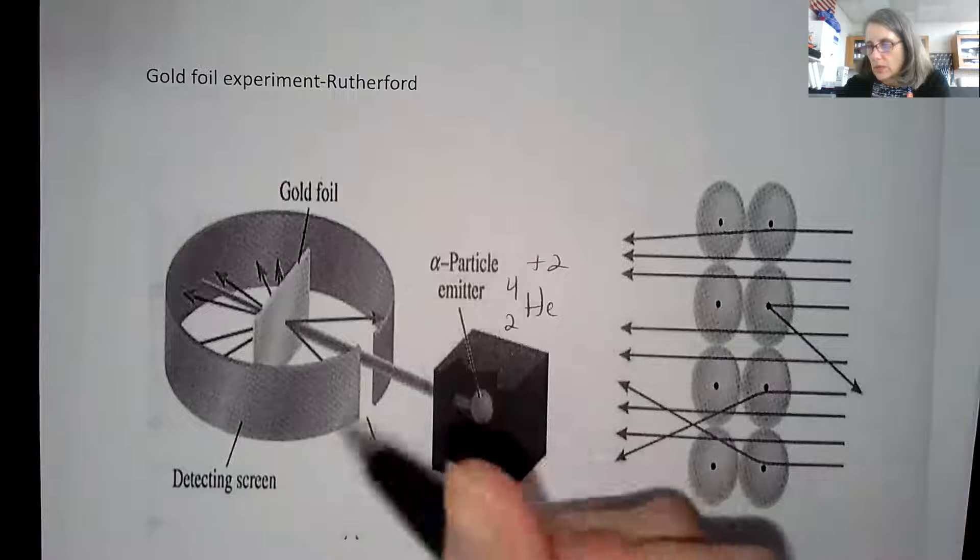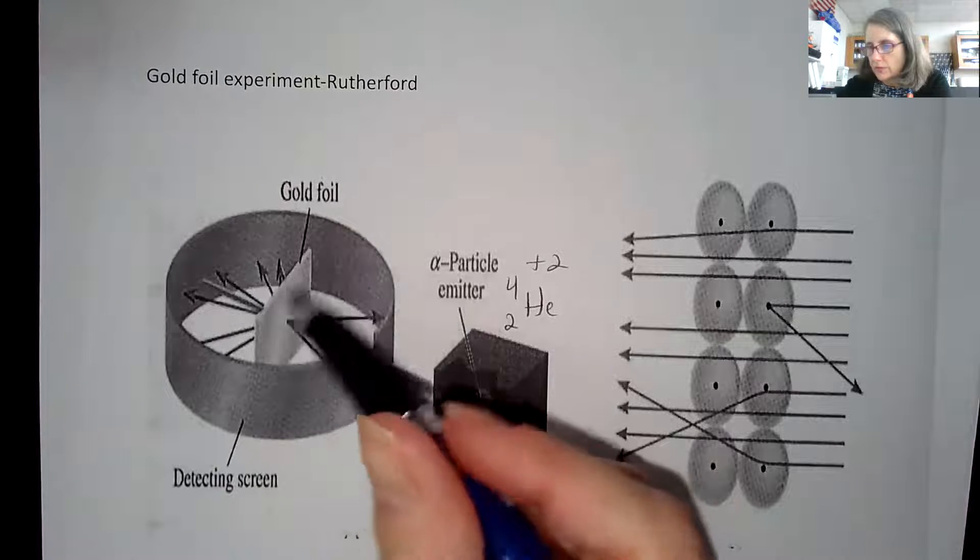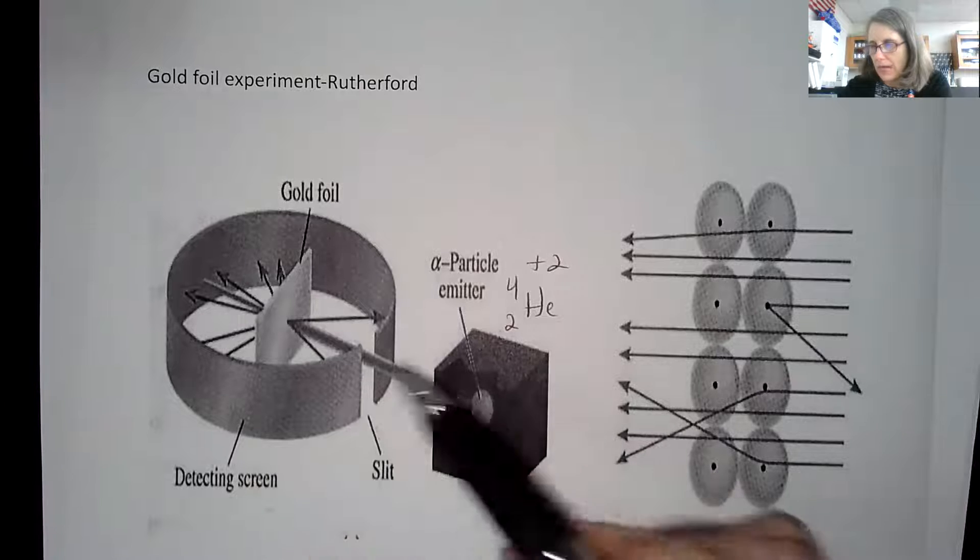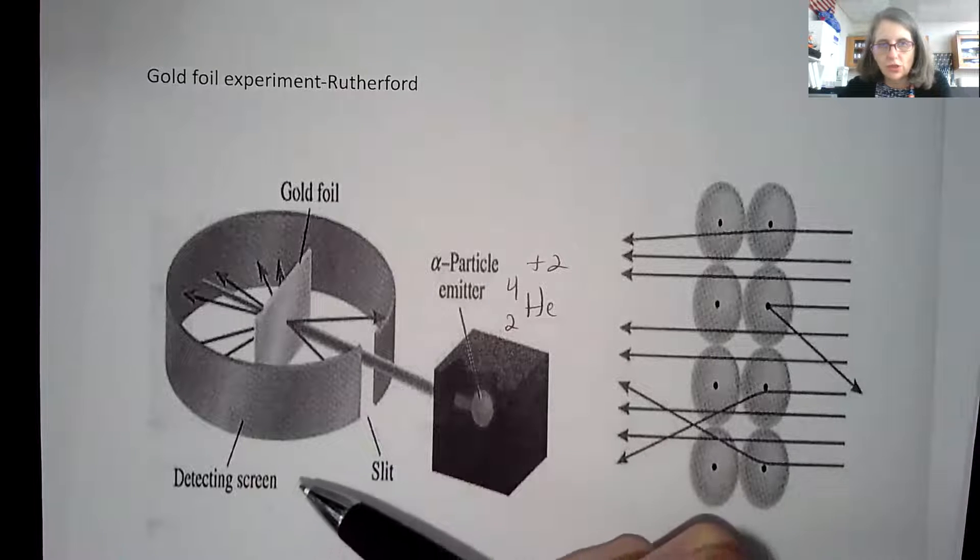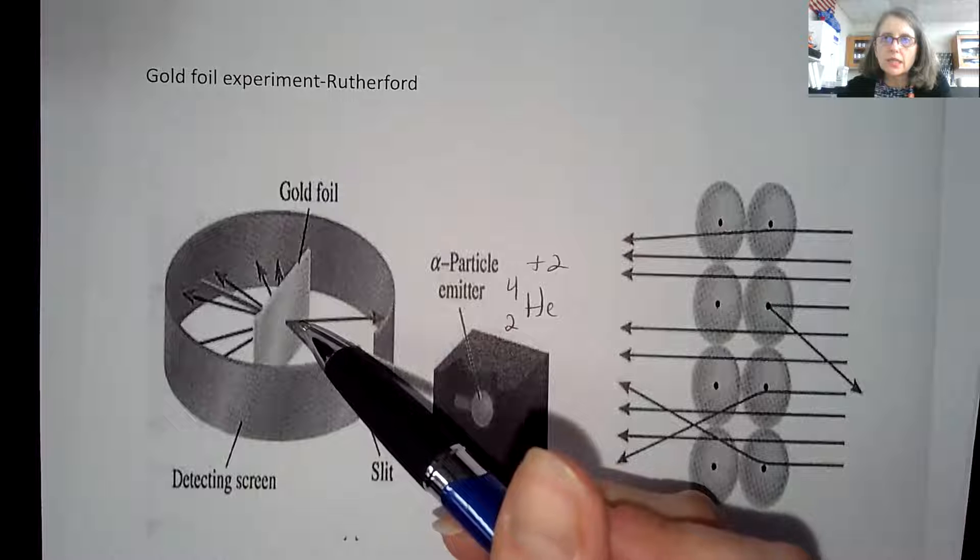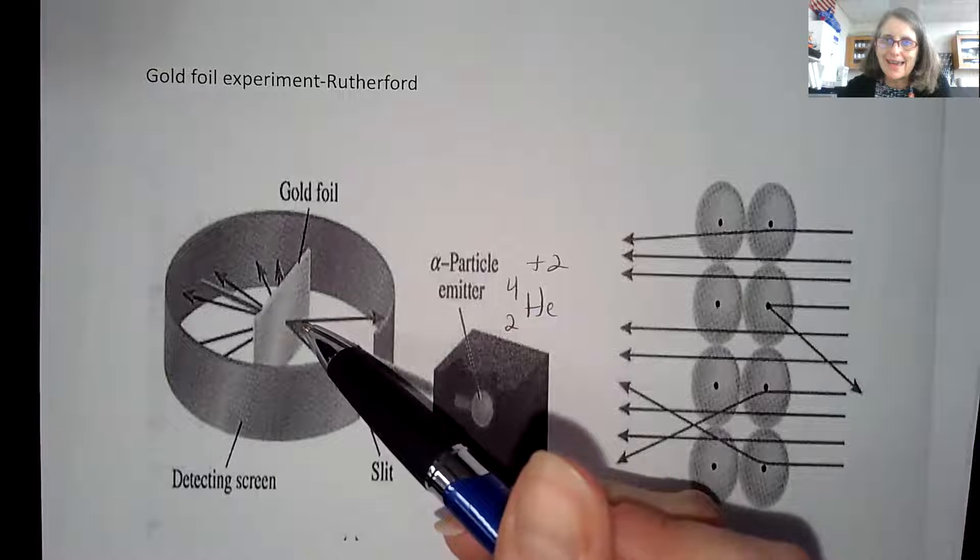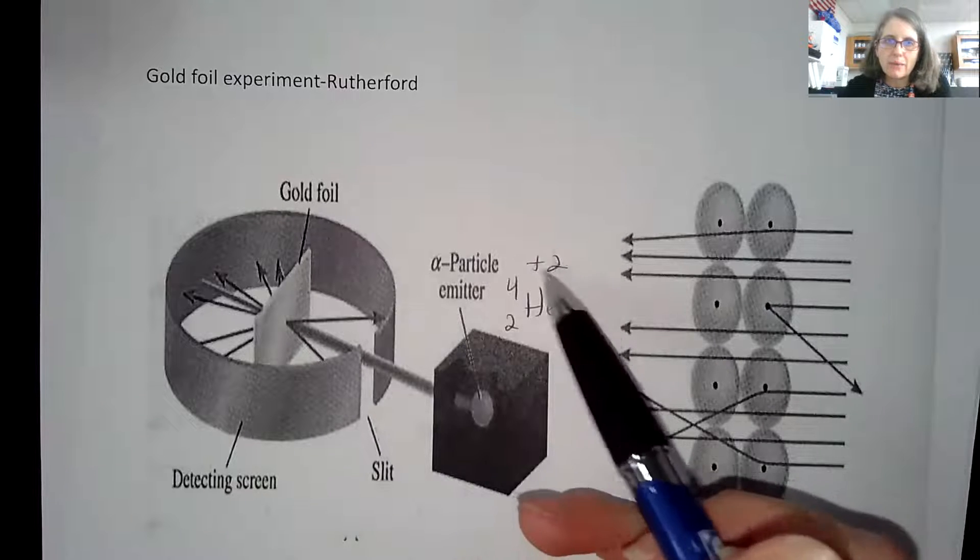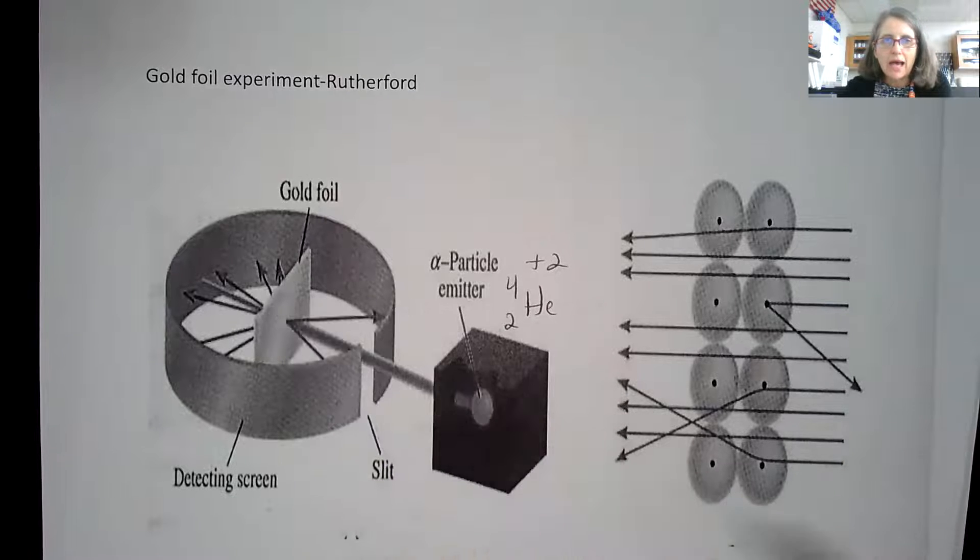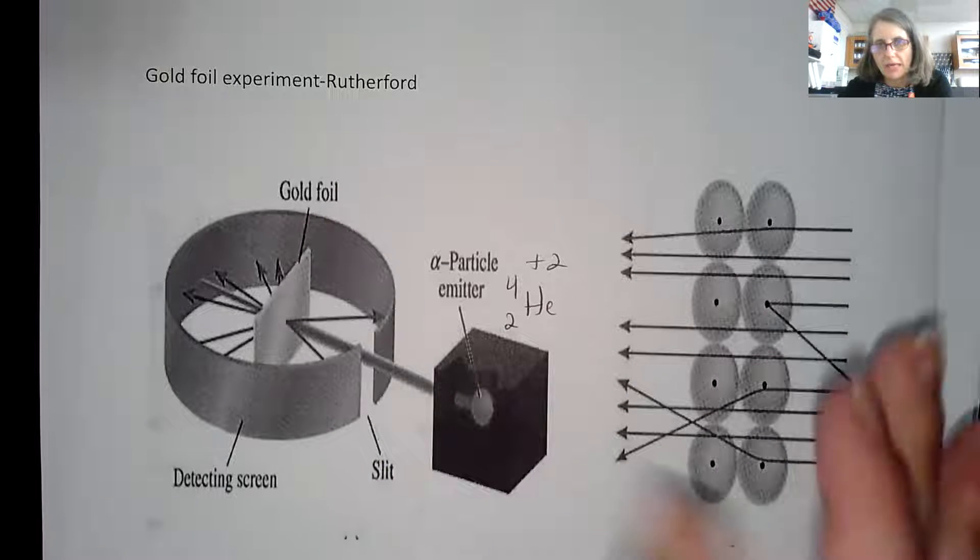He set up a piece of gold foil, which is in this picture, and then he had a detecting screen to see what happened when he put a positive charge through the gold foil. He was trying to see what was in the atom itself - if we have a positively charged particle going into the atom, how would it behave?